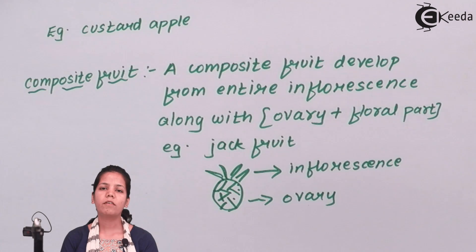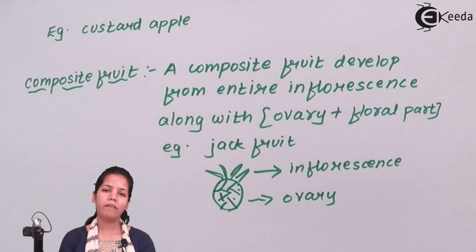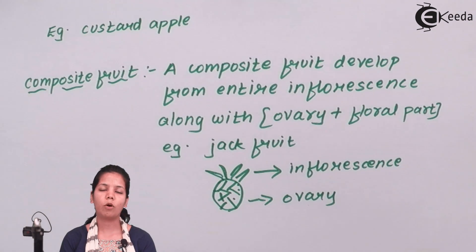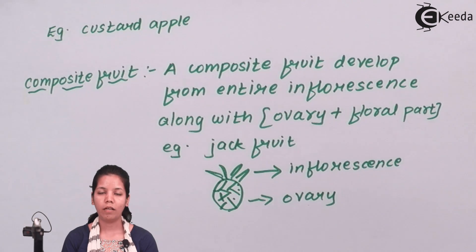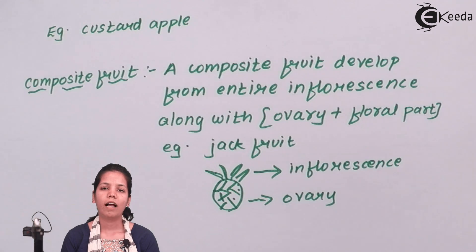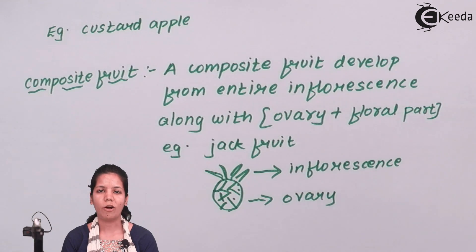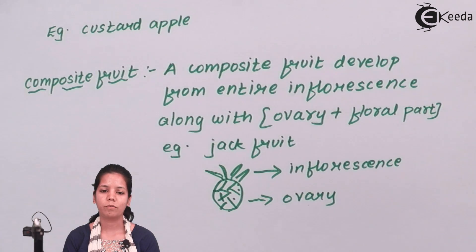Students, in this part of the chapter we have studied about the three different types of fruit: simple, aggregate, and composite, and how they are formed and the amount of ovaries involved in them. I hope you all are clear with this concept of types of fruit. Thank you.